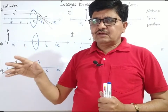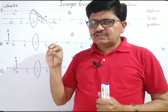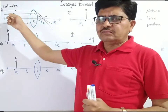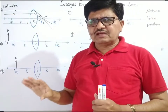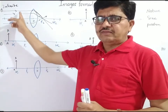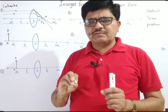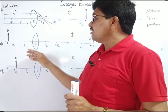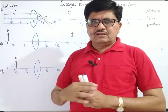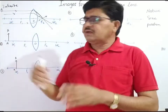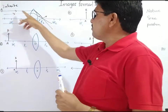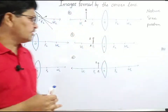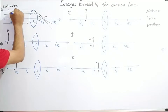Infinite rays are originated from that object and they are parallel, because the distance between these rays is very, very small. They are parallel to each other and parallel to the principal axis. The rays which are parallel to the principal axis are known as paraxial rays. If the object is placed at an infinite distance, these rays pass through the convex lens and the first incident ray is parallel to the principal axis.